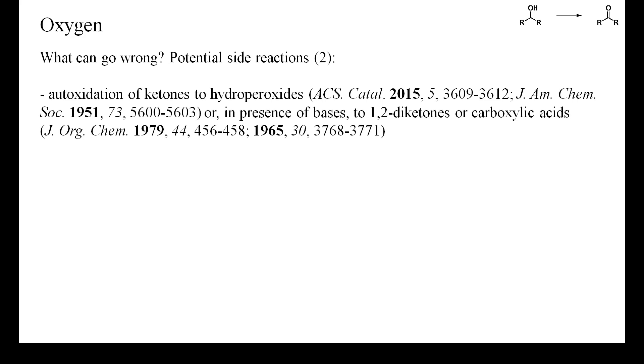Ketones with alpha-hydrogen can form hydroperoxides by simple autoxidation, even in the absence of any catalyst. These hydroperoxides can undergo further chemical transformations, in particular in the presence of bases, for instance into 1,2-diketones or carboxylic acids. Moreover, in the presence of copper salts, ketones with alpha-hydrogen can be hydroxylated by oxygen.